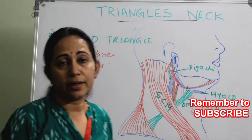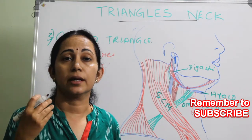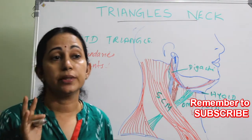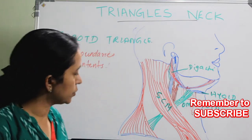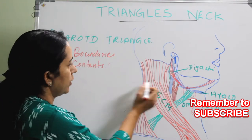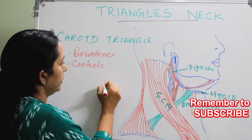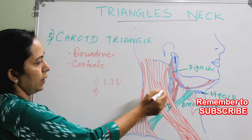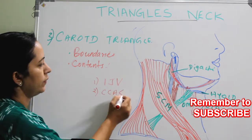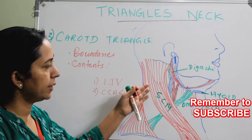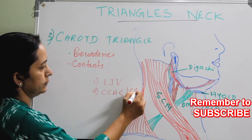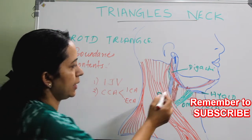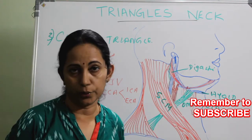This carotid triangle, as the name suggests, includes the internal jugular vein, the carotid artery, and also two nerves. The internal jugular vein is present here. The next structure is the common carotid artery, which divides into the internal carotid and external carotid artery.